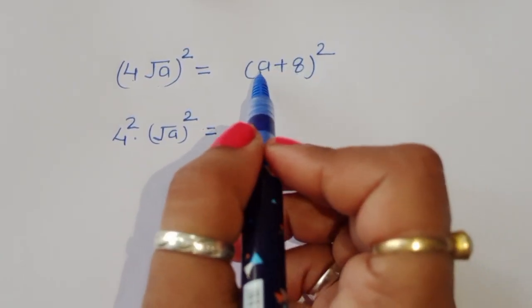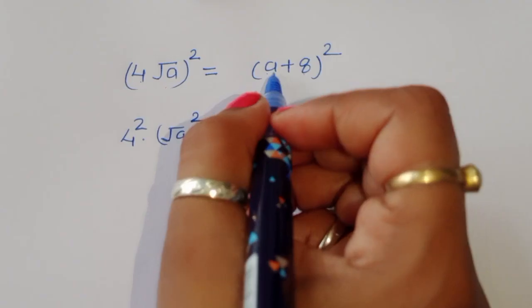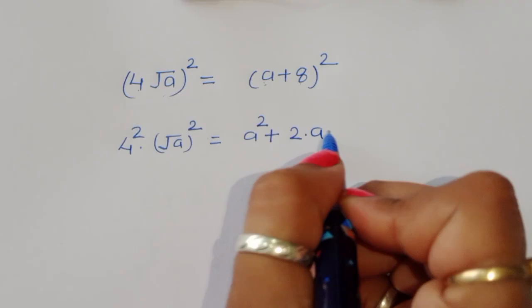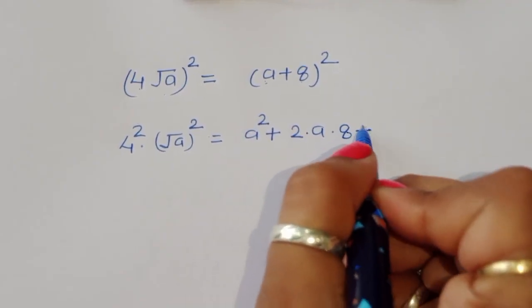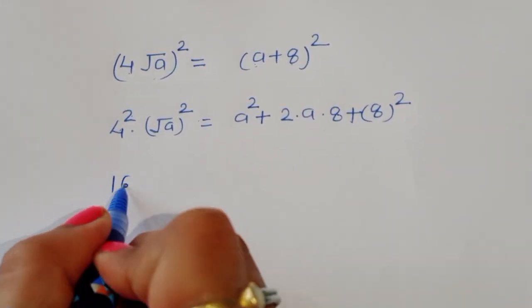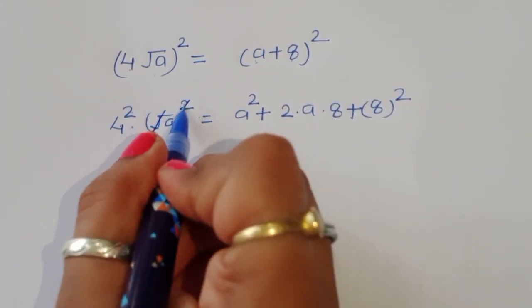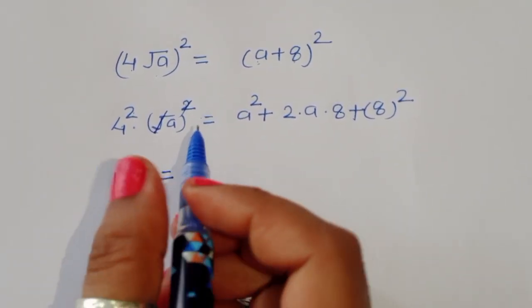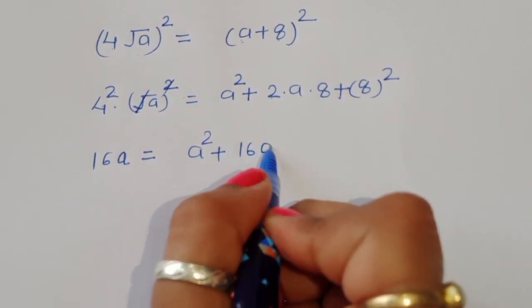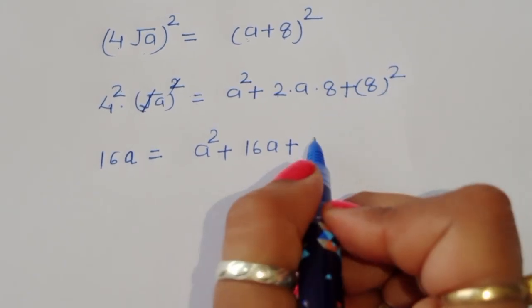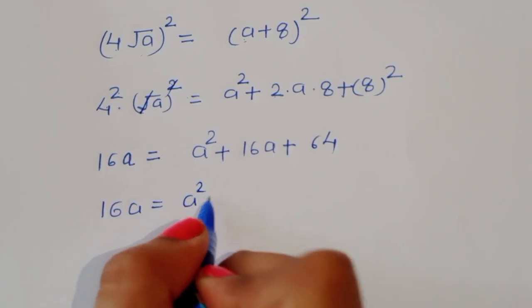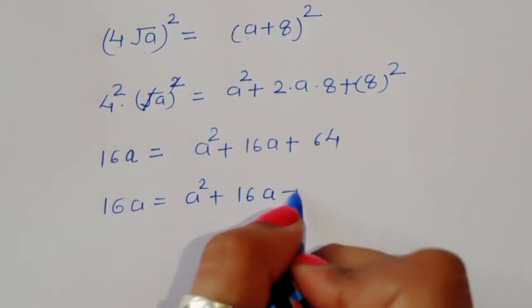On the right side, using (a + b)² = a² + 2ab + b²: (8 + a)² = 64 + 16a + a². So 16a = a² + 16a + 64.